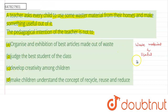Option A says: organized exhibition of articles made out of waste. That would be correct. Obviously, if children bring waste material from their home and make some useful things, that will be organized and then exhibited as articles made from waste. So option A is correct — it is an intention of the teacher.